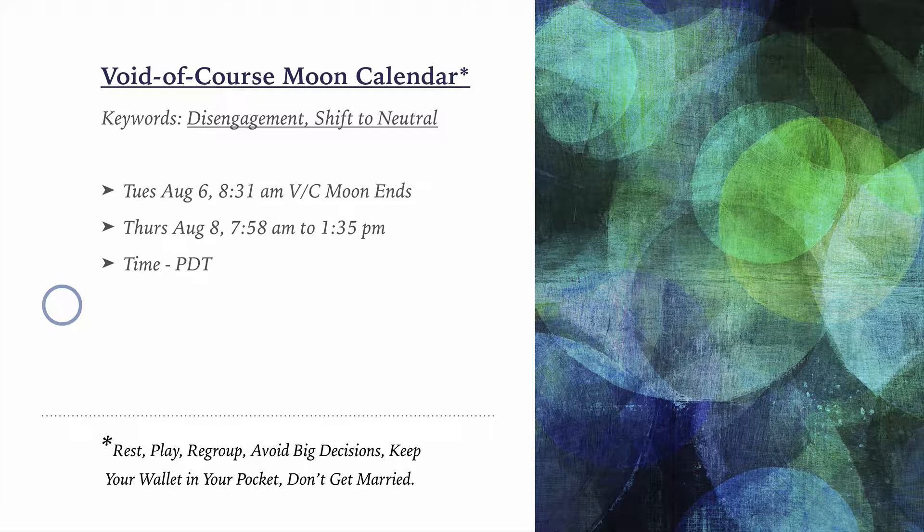As usual, here's a little definition. The Void of Course Moon is the period of time that it takes for the moon to transition from one astrological sign to another, and this occurs every two and a half days. Sometimes it can happen in a matter of minutes, 15 minutes or so, and every so often it takes much longer, like 24 hours, 30 hours.